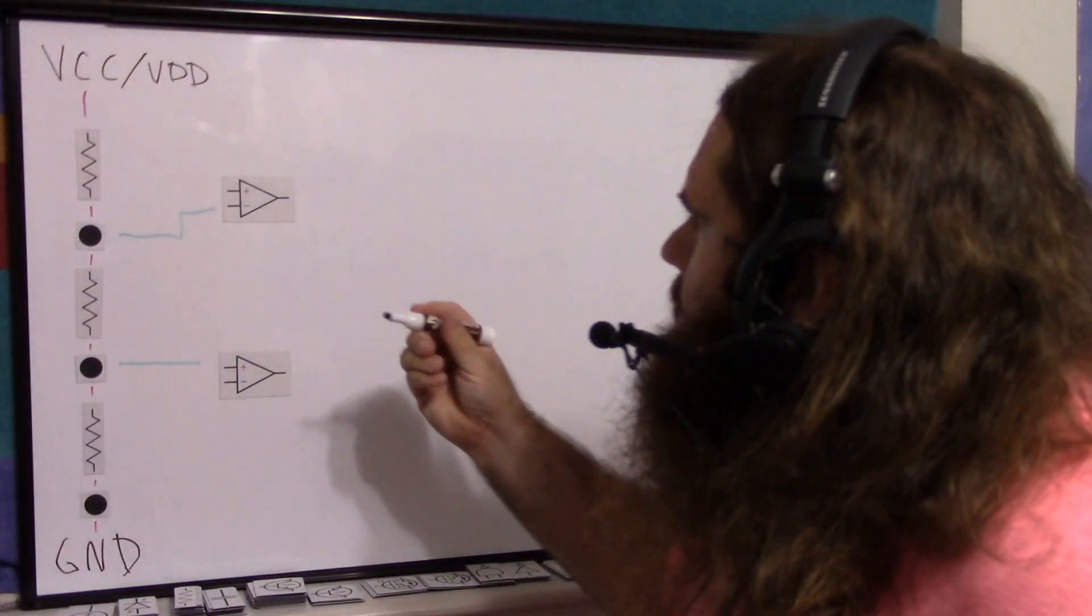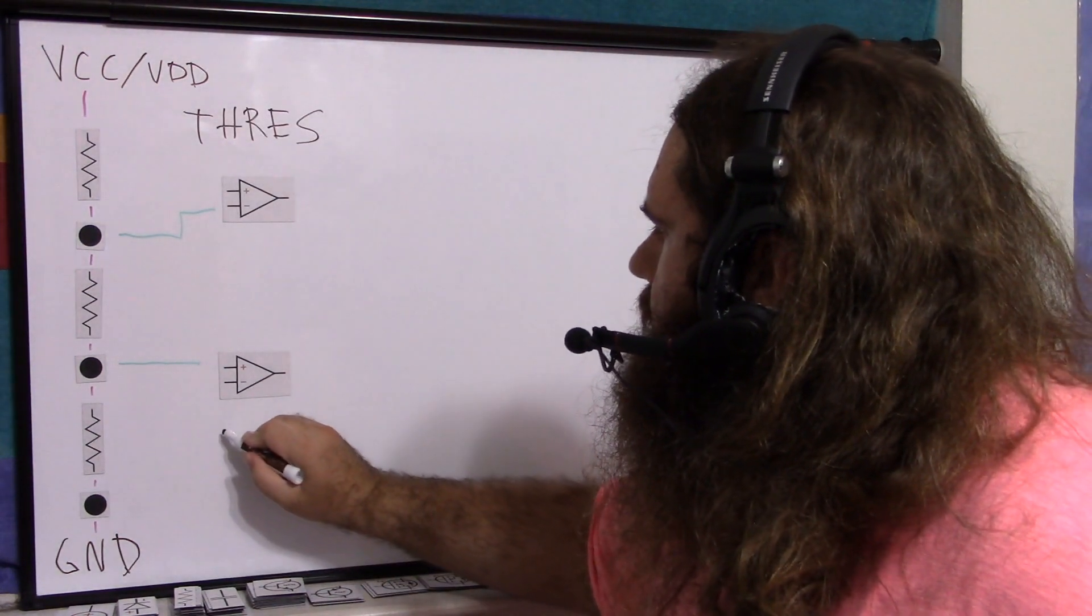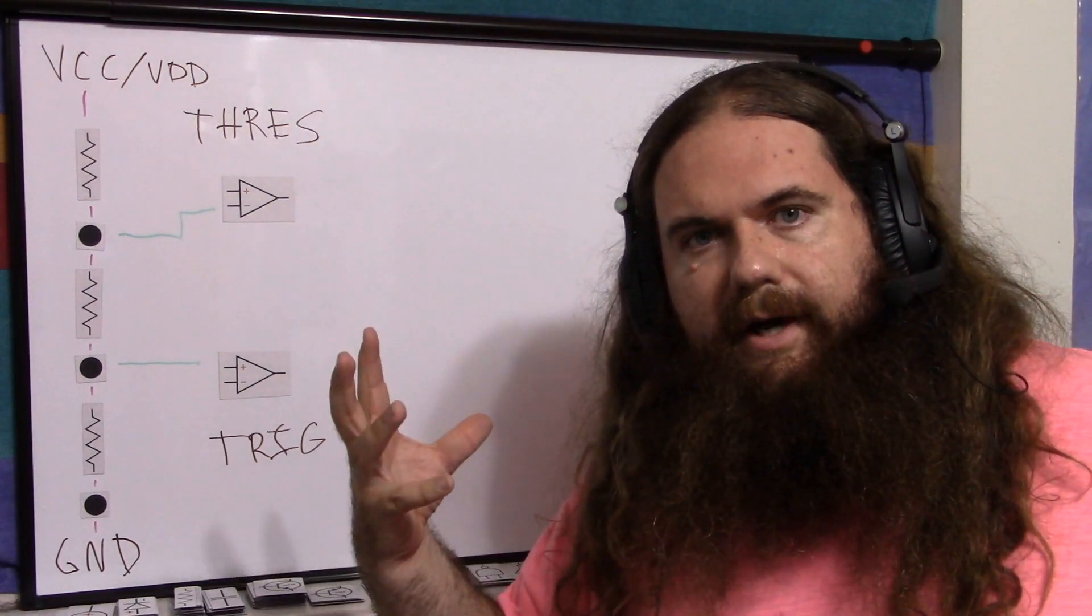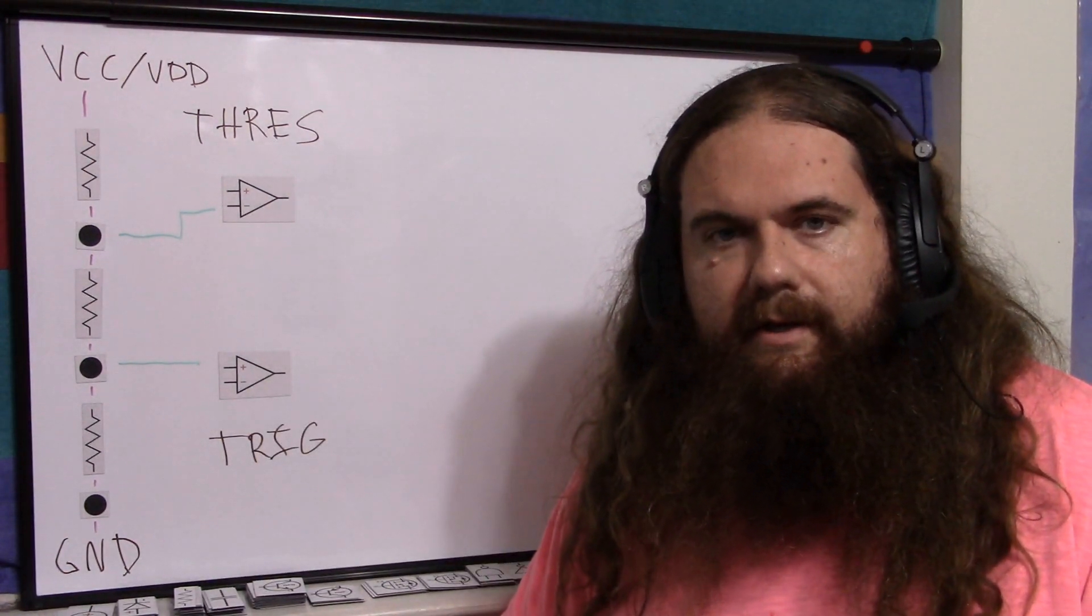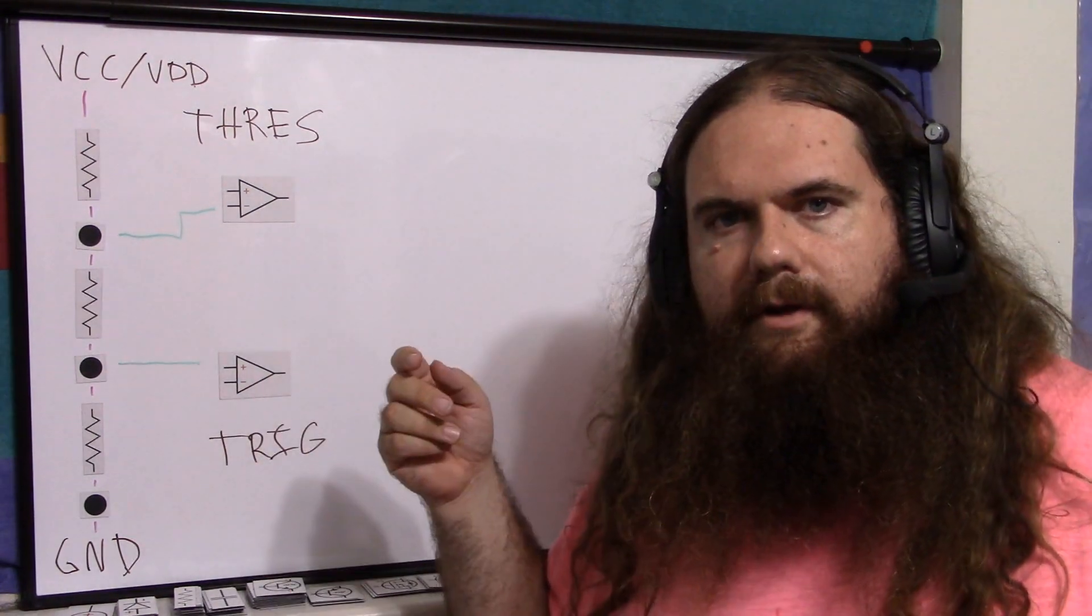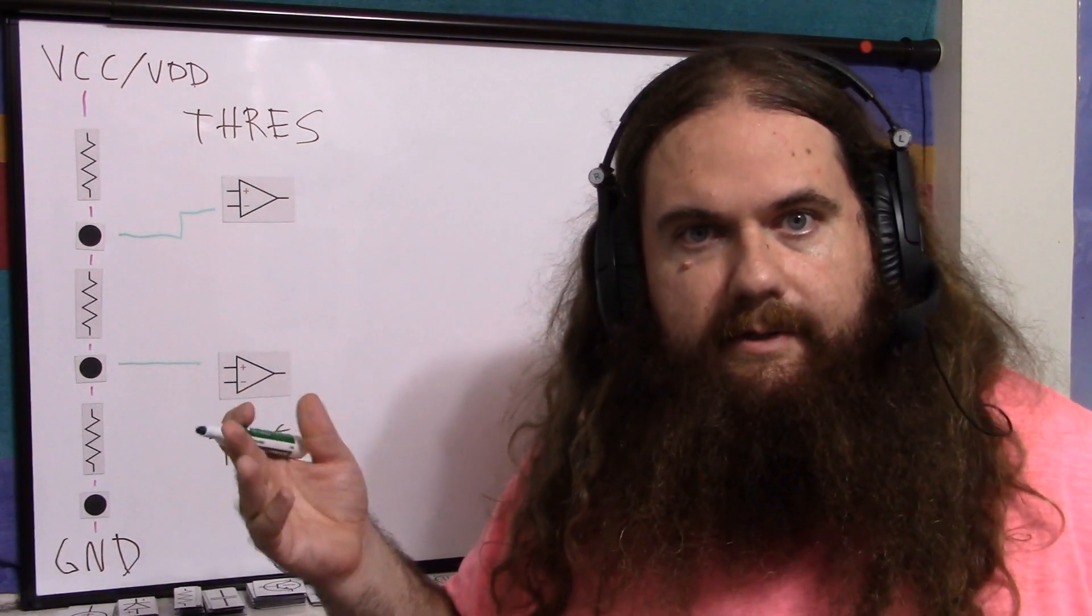The two-thirds voltage here connects to the inverting input of this comparator. The one-third voltage here connects to the non-inverting. So this is using two-thirds of VCC as negative, and this is using one-third of VCC as positive. That's what we're comparing to. So that's why the voltage divider. Now, let's add two pins: threshold and trigger.